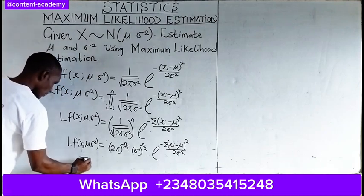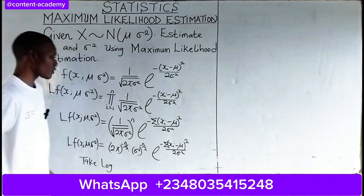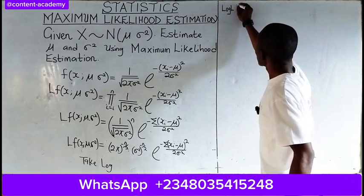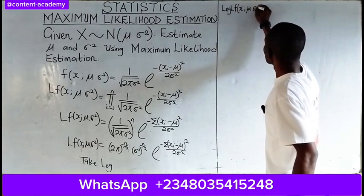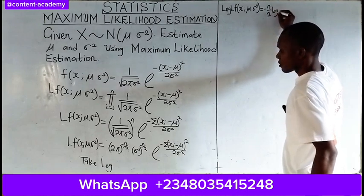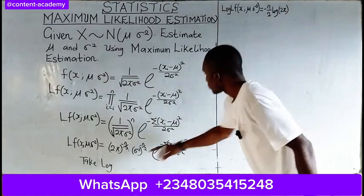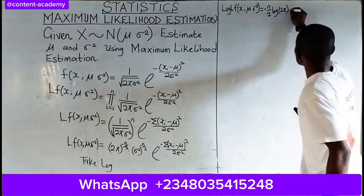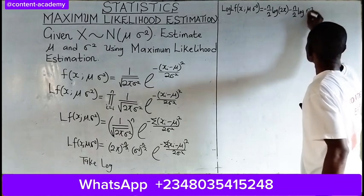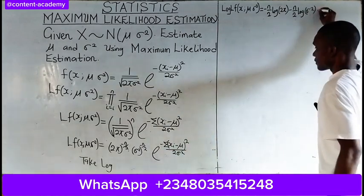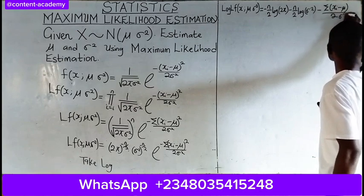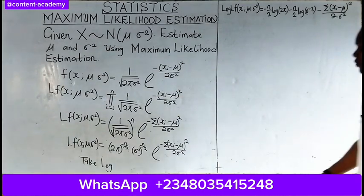The next thing to do is to take the log. Taking the log of this function, we get: log L(x; mu, sigma squared) equals negative n over 2 times log(2 pi), then negative n over 2 times log(sigma squared), and finally negative summation of (x_i minus mu) squared all over 2 sigma squared. We have succeeded in taking the log, and we can take this as our equation star, which we will refer to when finding sigma squared.